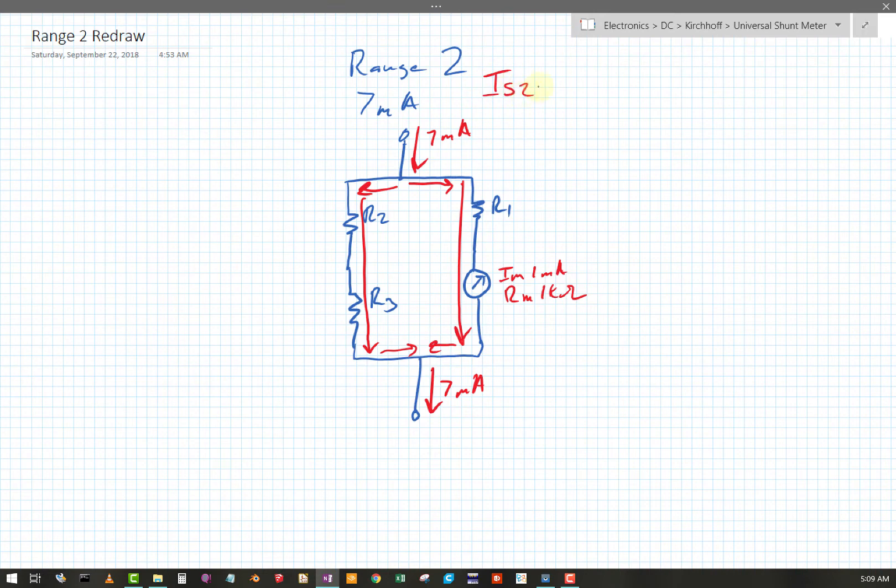I shunt 2, let's call it, let's label it, I meter doesn't change. I shunt 2 equals I range 2 minus I meter. Okay, so I S 2 equals 7 milliamps minus 1 milliamp. I S 2 equals 6 milliamps for this circuit. To create, to design for a range, a second range of 7 milliamps.